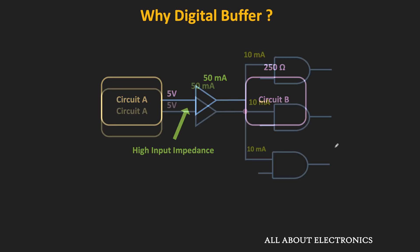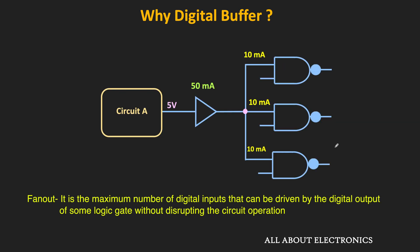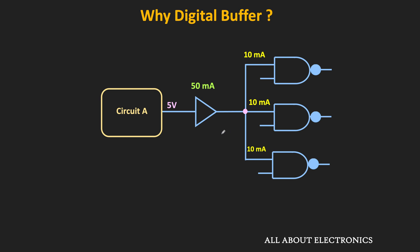Apart from that, whenever we want to increase the fanout of the circuit, this buffer is very useful. With this buffer, we can easily drive three NAND gates where each NAND gate is drawing 10 mA current. But if we just directly connect the three NAND gates to circuit A, it will not be able to drive them, because its maximum current capacity is equal to 10 mA. So that is the basic usage of the digital buffer.